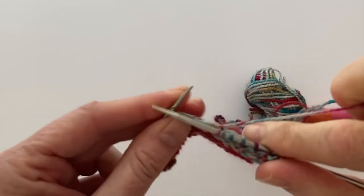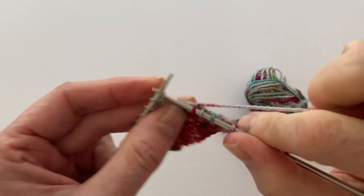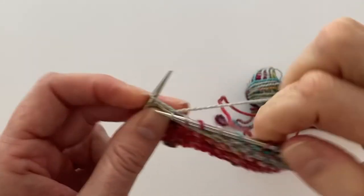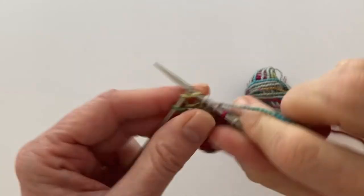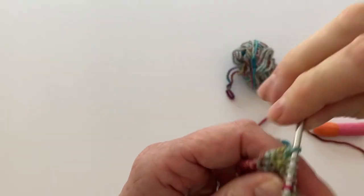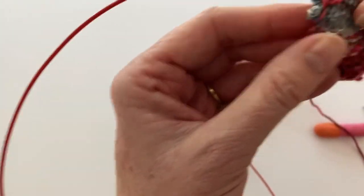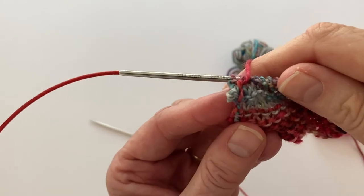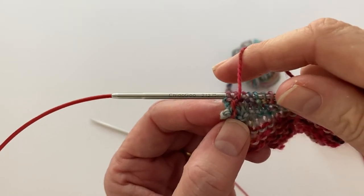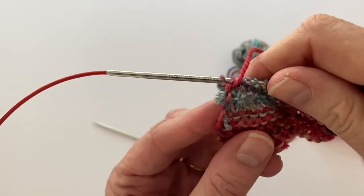Keep knitting my row to the end of the row and you'll be able to see the carried yarn starting to make a little woven line up the inside of the back of my work.